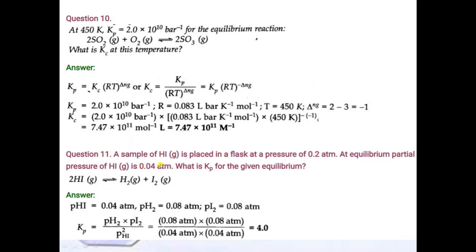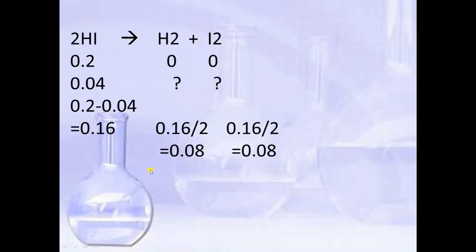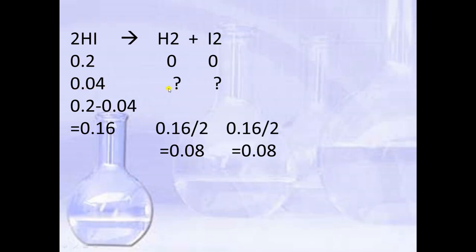Question number 11: a sample of HI (hydrogen iodide) is placed in a flask at a pressure of 0.2 atm. At equilibrium, the partial pressure of HI is 0.04 atm. Write the equation with initial pressure 0.2 for HI and 0 for H2 and I2. The change in HI pressure is 0.2 minus 0.04 equals 0.16. For 2 moles of HI the change is 0.16, so for 1 mole of H2 and I2 each, the change is 0.16/2 = 0.08.